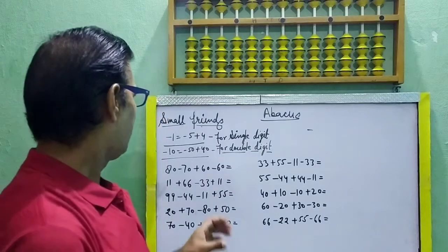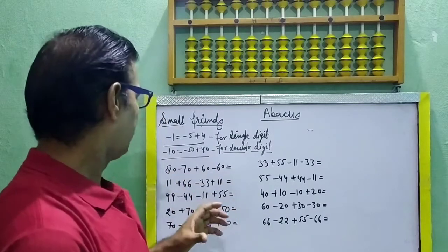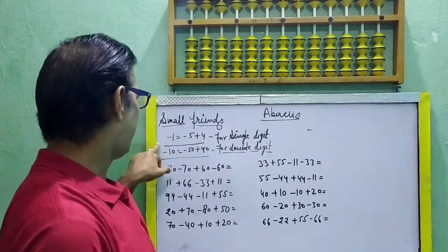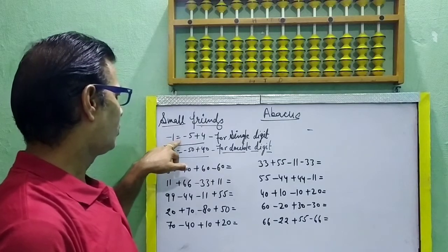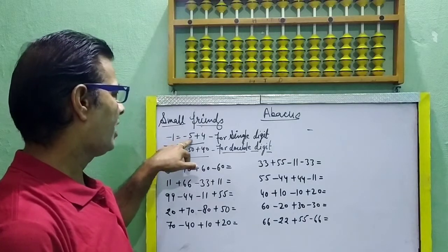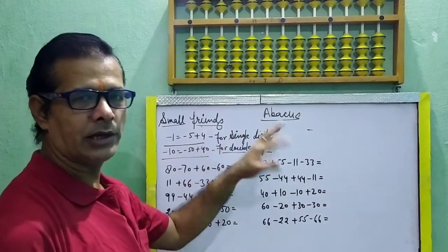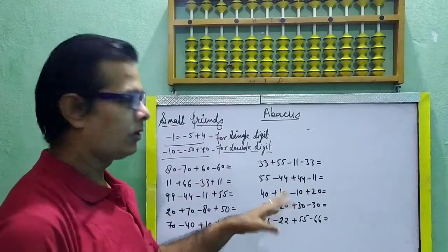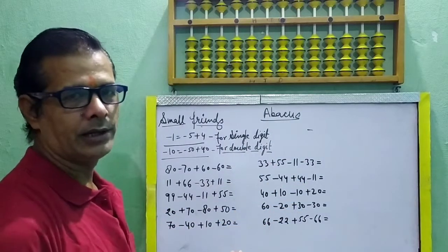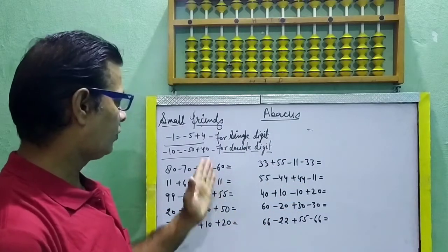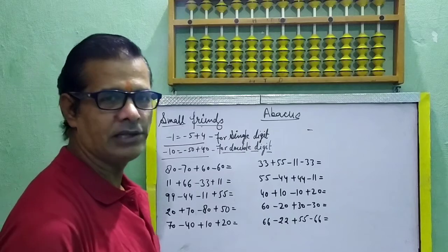Students, in the last videos we have already read minus 1 is equal to minus 5 plus 4, only for single digit questions. We have already read single digit wali questions — humne last video mein padh liye the.